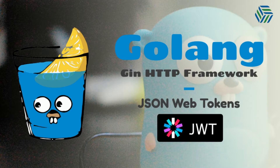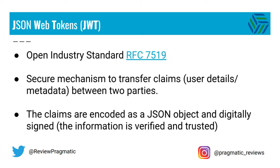In this video we're going to take a look at JSON web tokens and then we're going to create an authorization middleware for our application using this standard. JSON web tokens are an open standard — a secure mechanism to transfer claims between two parties. A claim could be user information or custom metadata, and those claims are encoded as a JSON object and digitally signed using a secret key, which implies that the information is verified and trusted.